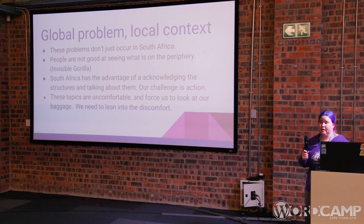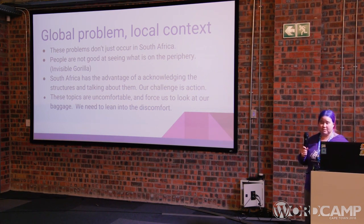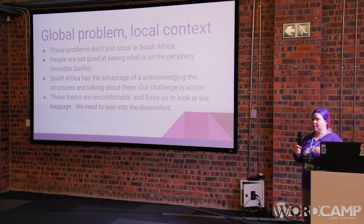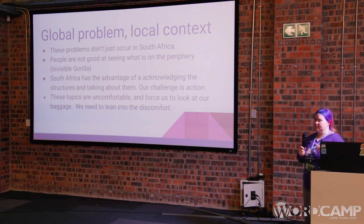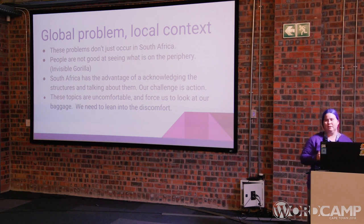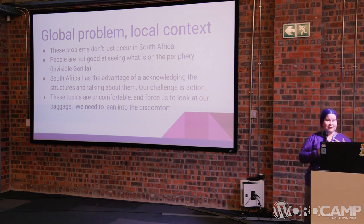We're not good at seeing what's in our periphery, and if you don't know about something you're not going to act on it. There's a really cool video on YouTube called the invisible gorilla — a social experiment specifically to see how people responded to things on their periphery. They had a group of people, some in black clothes and some in white clothes, and asked participants to count how many times the people in white clothes passed the basketball — it turned out to be 15 times. And then they'd ask, what did you think of the man in the gorilla suit? The participants would go: what? Because they were so focused on the basketball, they didn't see the man in a gorilla costume walk across the stage.